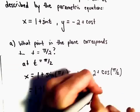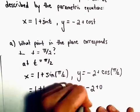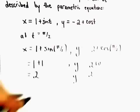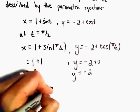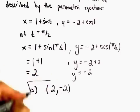Cosine of pi over 2 is going to equal 0. So the y-coordinate is simply going to equal negative 2. So the point in the plane at pi over 2, it'll be sitting at the point 2 comma negative 2.